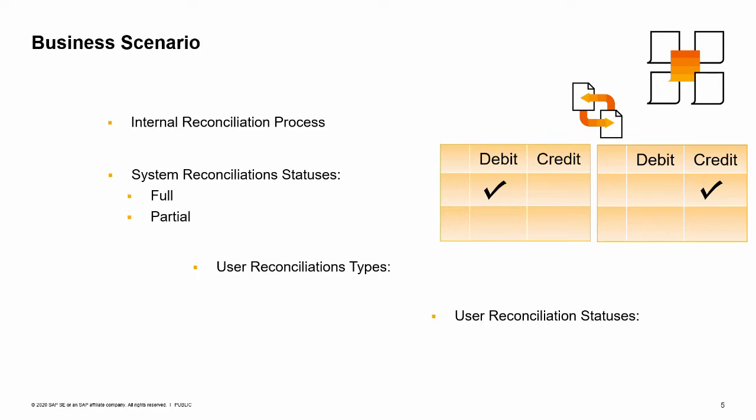You give Maria two examples of full automatic reconciliations. Firstly, in the business partner's master data accounts when an incoming payment is based on an AR invoice or a credit memo on an AR invoice. And secondly, in clearing GL accounts when you deposit a check received by an incoming payment. You tell Maria that SAP Business One also performs partial system reconciliations if, for example, a customer partially pays an AR invoice.